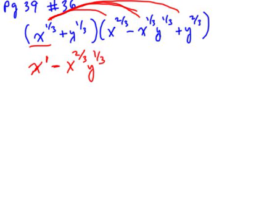Then we do x to the one-third times y to the two-thirds. Since they have nothing in common — one's an x and one's a y — we just write it as x to the one-third y to the two-thirds. They cannot be added together.